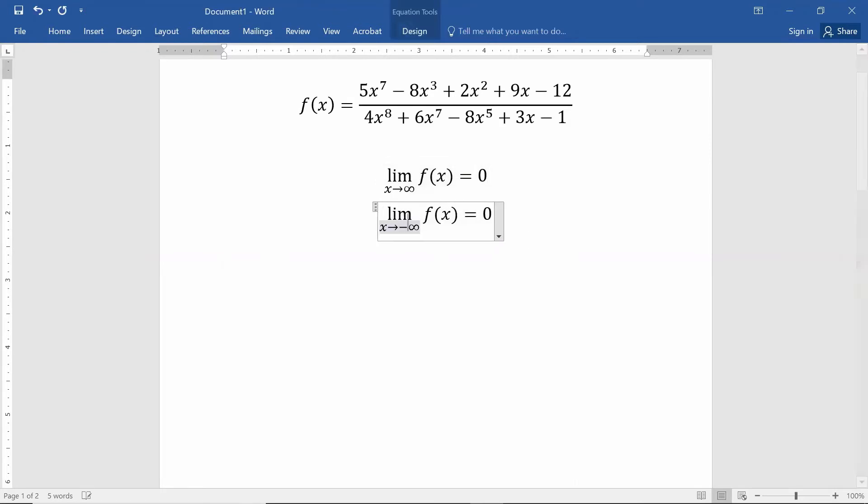The same thing is true as x approaches negative infinity. You also get zero. So as long as our numerator has smaller degree than our denominator, we get zero as x approaches infinity and as x approaches negative infinity.